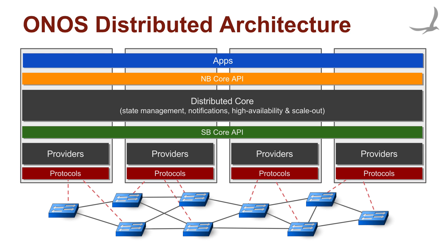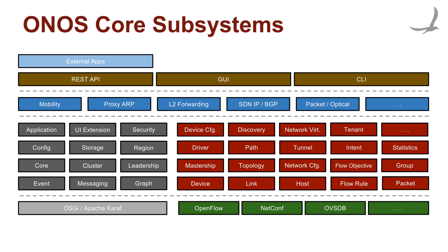Even though the ONOS core is often depicted as a monolithic block, such as in this diagram, it is in reality an assembly of individual subsystems, each responsible for tracking their own class of network state. This diagram offers a high-level inventory of such subsystems. Most of these provide services which can be utilized by other subsystems and which collectively form the ONOS core northbound API.